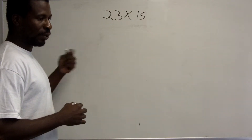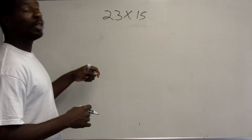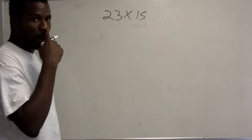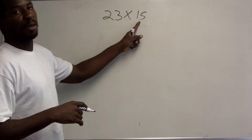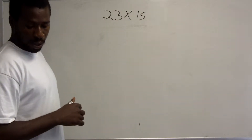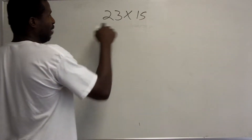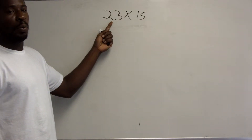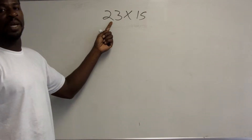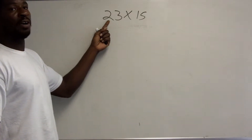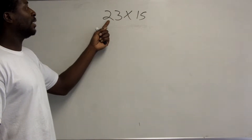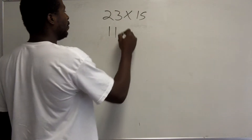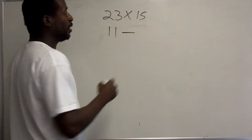With duplication and mediation, one of the numbers we're going to mediate — continually take half of — until we get down to one. We double the other number alongside that. Anytime you take half of an odd number, we forget about the remainder. So half of 23 is 11 and a half; we record 11 and forget the half. We double 15 to get 30.